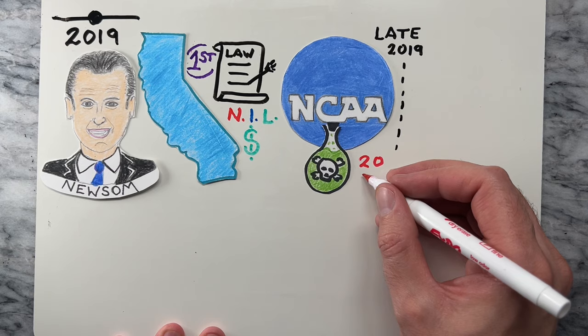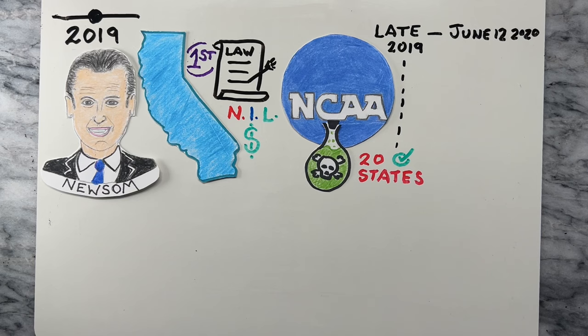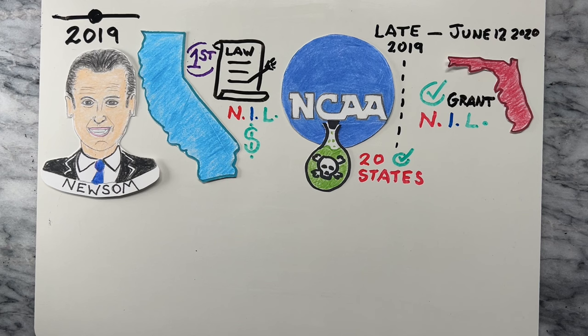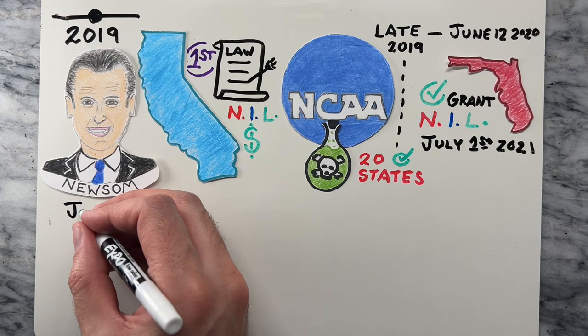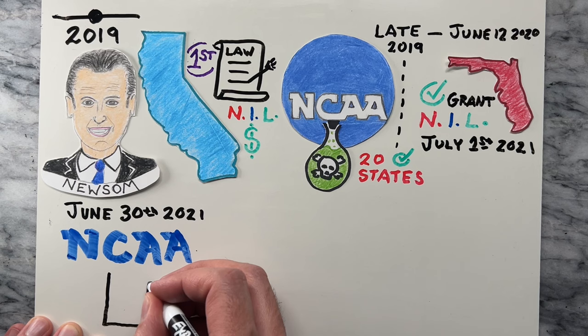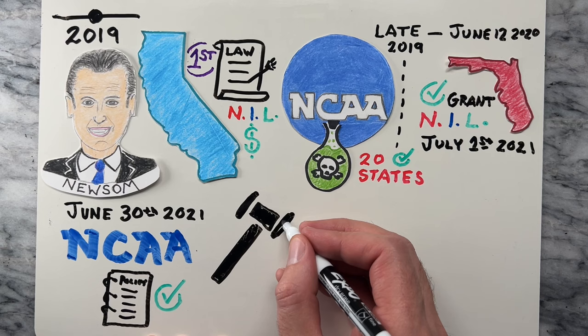On June 12, 2020, Florida passed a law granting NIL rights to college athletes, with an effective date of July 1, 2021, the earliest of any state law at this point. Finally, on June 30, 2021, the NCAA changed its policy to allow NIL, after a Supreme Court ruling nine days prior stated that the NCAA couldn't limit education-related benefits to athletes.